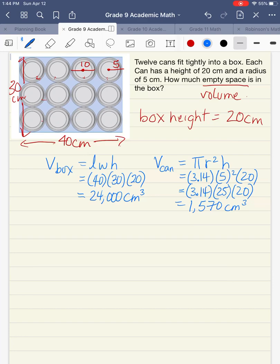We have the volume of our box and then we have the volume of one can. So to find our empty space, we need to do some subtraction. The empty space is going to be equal to the volume of the box minus the volume of 12 cans. So we're going to do 12 times the volume of a can and we're going to put in the numbers that we already found.